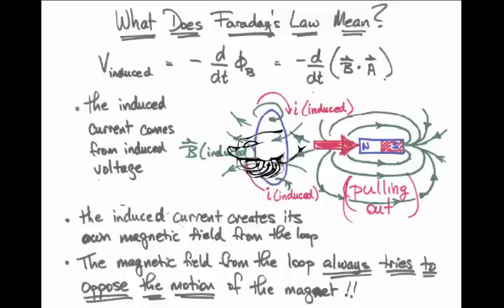The way I get a south pole created out of that loop of wire is, again, if I point my thumb in the opposite direction — because that represents the north pole — my fingers curl around the loop in the correct direction to predict what the current would be, and that gives me a clockwise current in the loop.